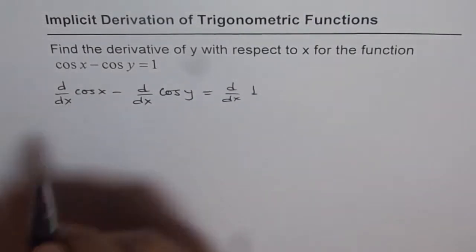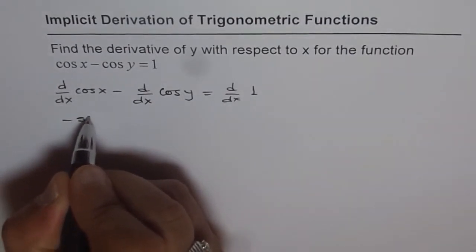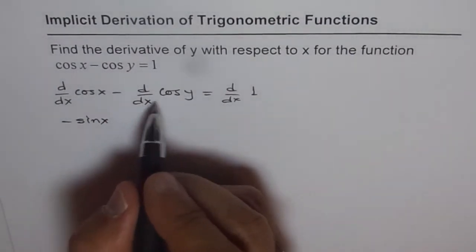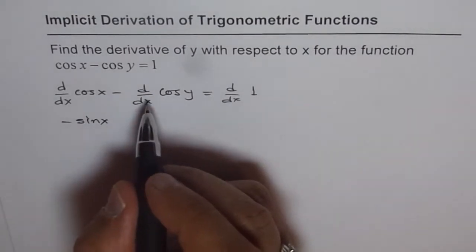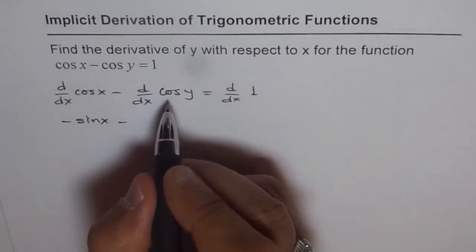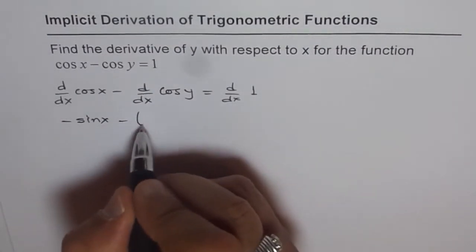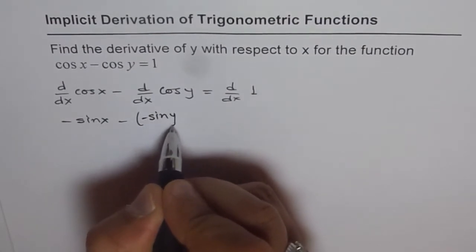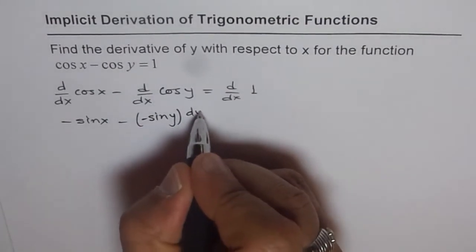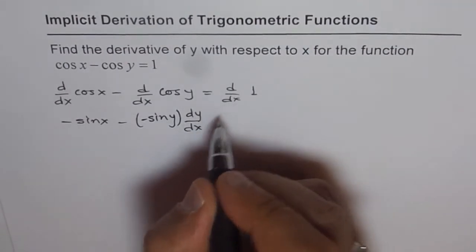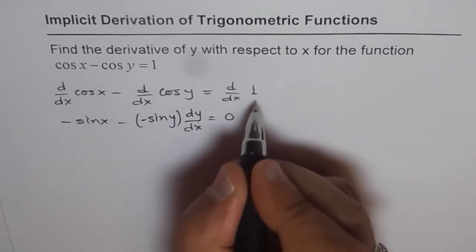Now, d/dx of cos x is minus sin x. d/dx of cos y will be minus sin y dy/dx. And on the right side, we get 0 since it is a constant.